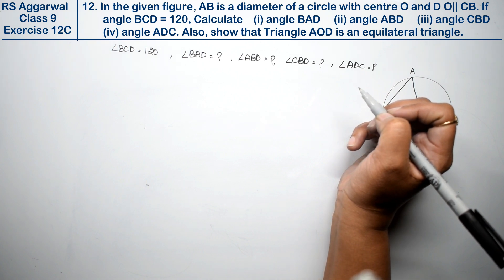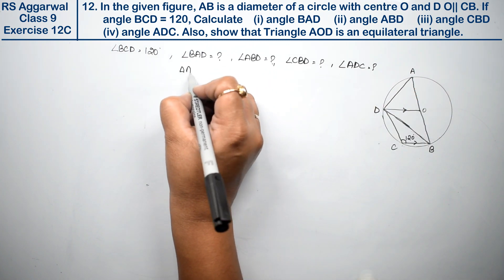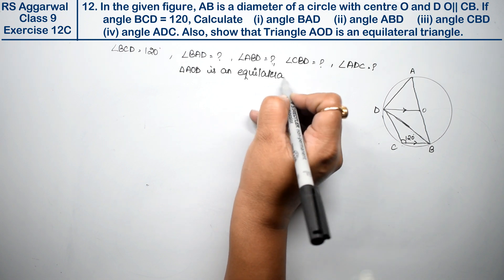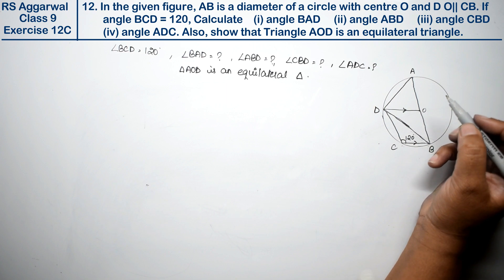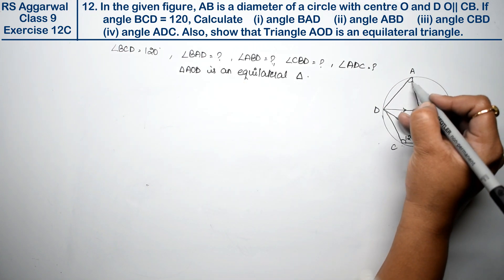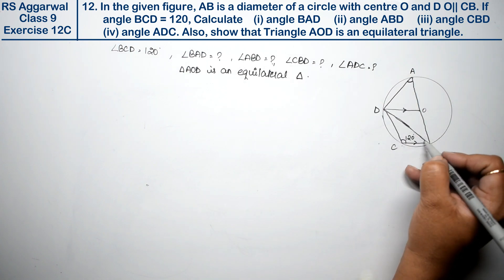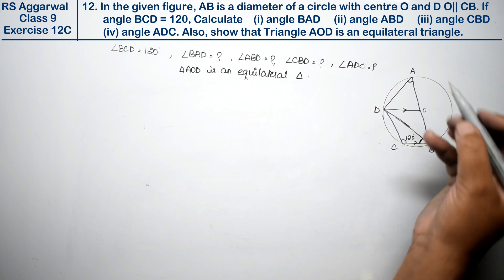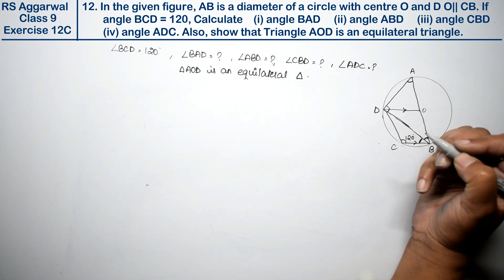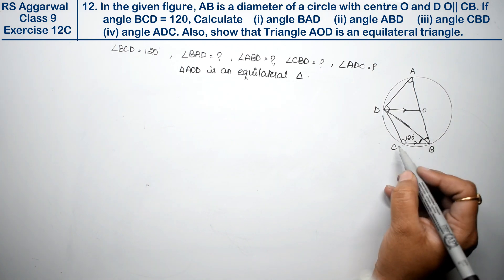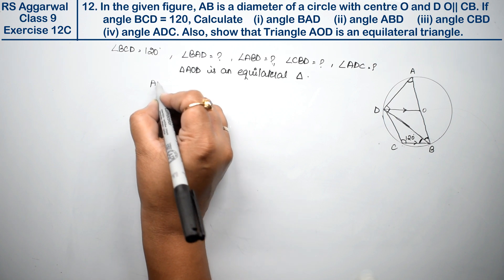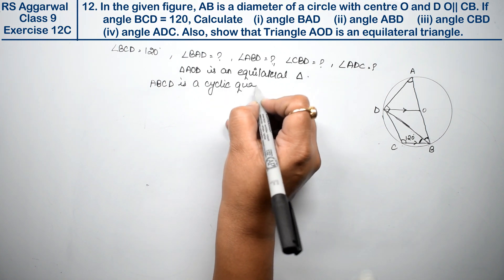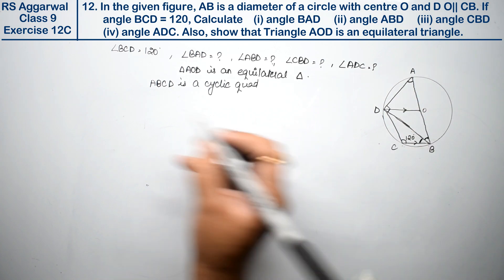Also show that triangle AOD is an equilateral triangle. First, to find these angles, notice that ABCD is a cyclic quadrilateral.